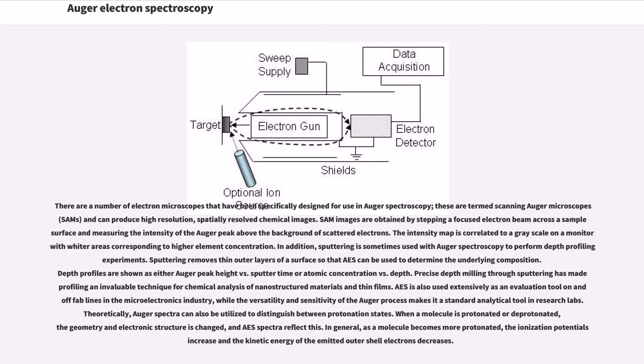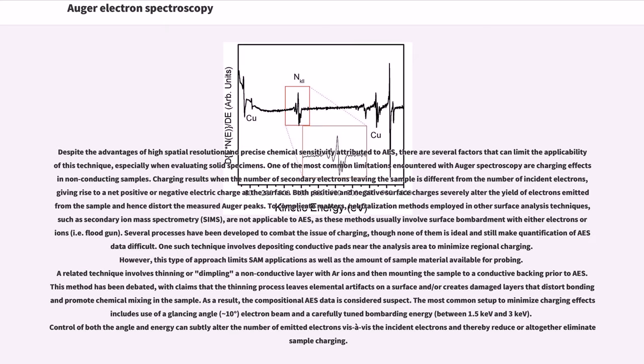Theoretically, Auger spectra can also be utilized to distinguish between protonation states. When a molecule is protonated or deprotonated, the geometry and electronic structure is changed, and AES spectra reflect this. In general, as a molecule becomes more protonated, the ionization potentials increase and the kinetic energy of the emitted outer shell electrons decreases.